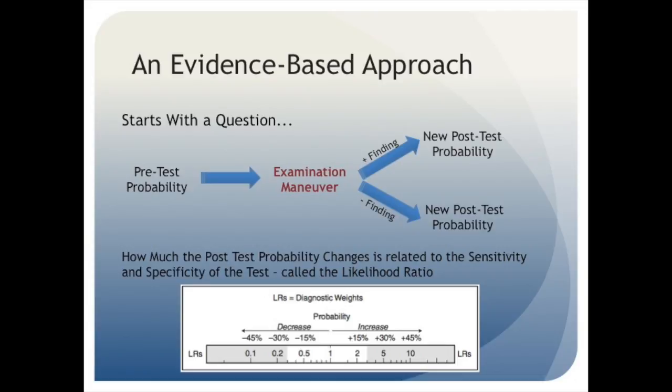For example, if you don't think that your patient is anemic, giving them a pre-test probability of 20%, but then you discover conjunctival pallor on exam, that really changes your thinking, giving you a much higher post-test probability. How much a given physical exam maneuver changes your pre-test probability depends on the sensitivity and specificity of the test, which in this case is expressed as a function called the likelihood ratio. You can see in the figure how a positive or negative likelihood ratio can affect your pre-test probability either a great deal — for example, if you have a positive likelihood ratio of 10 or more — or barely at all, for example, a likelihood ratio close to 1.